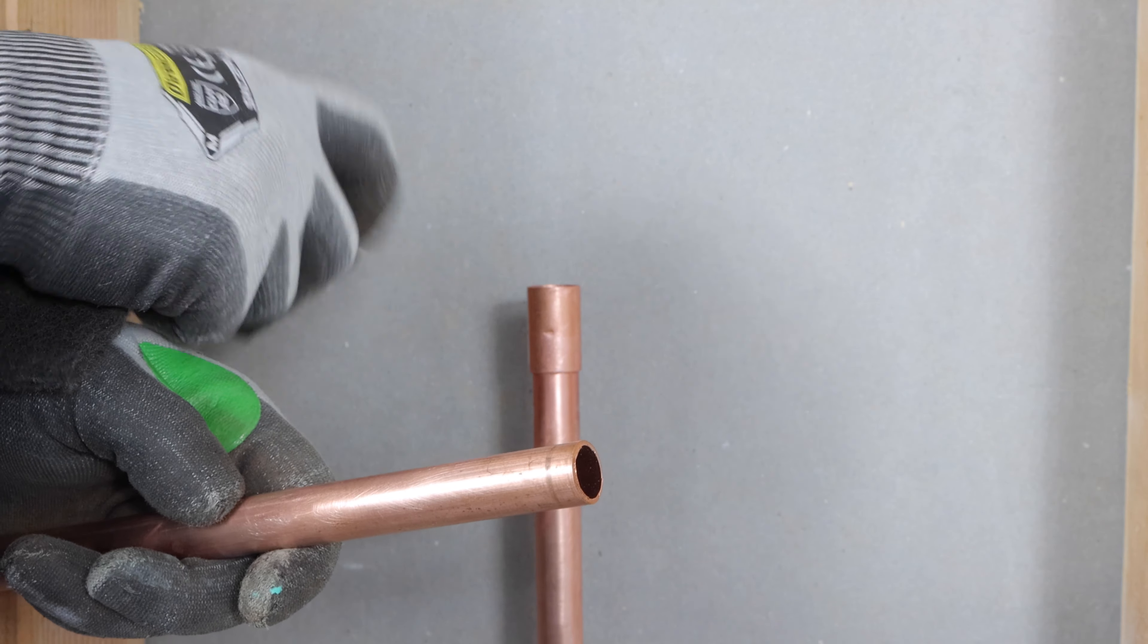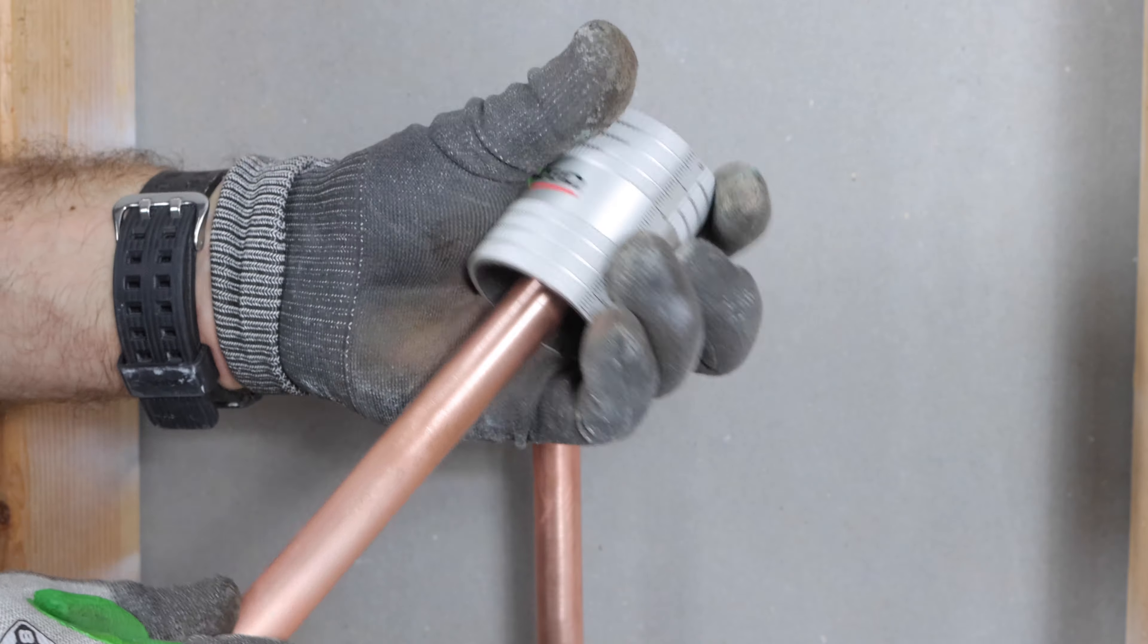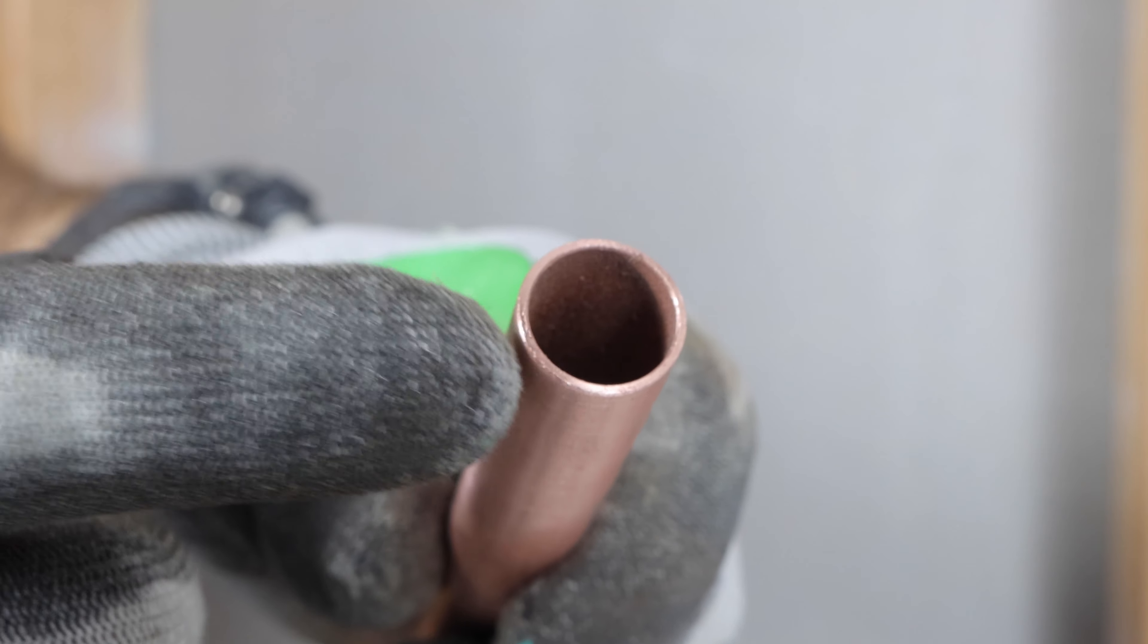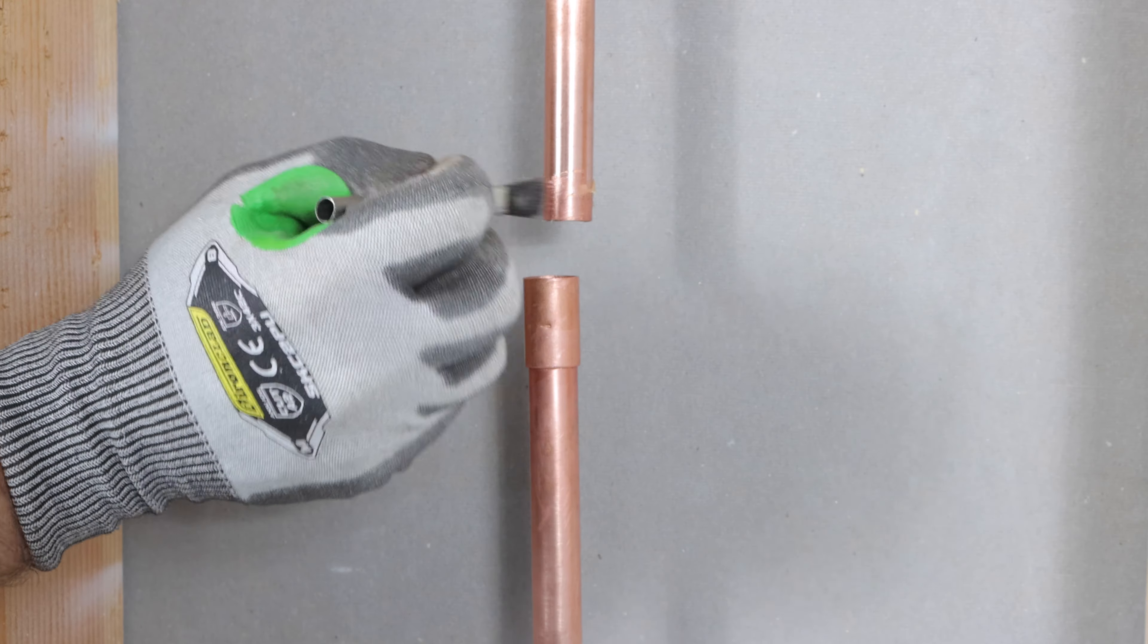Now for the other pipe you do the exact same thing. You want to deburr the inside, deburr the outside, and then make sure that you inspect it for any burrs. Clean that with emery cloth, and then apply your flux to that pipe as well.